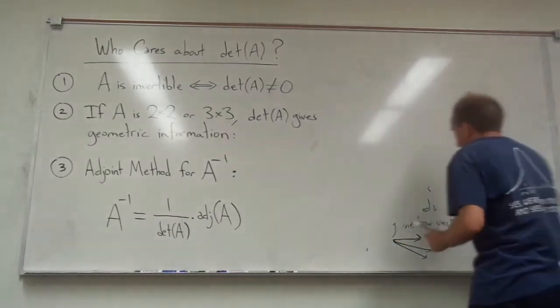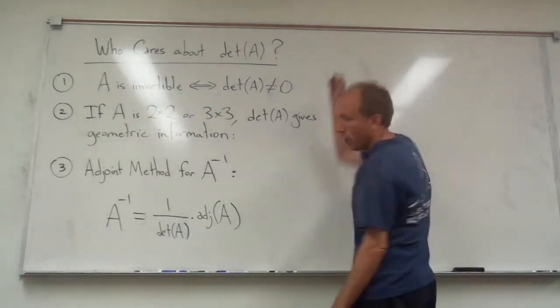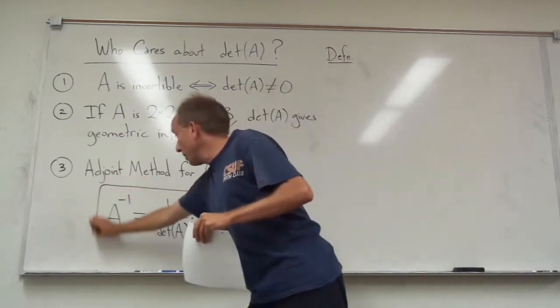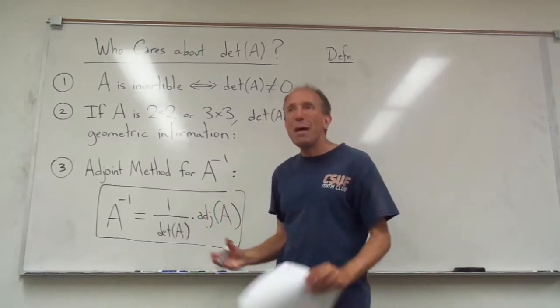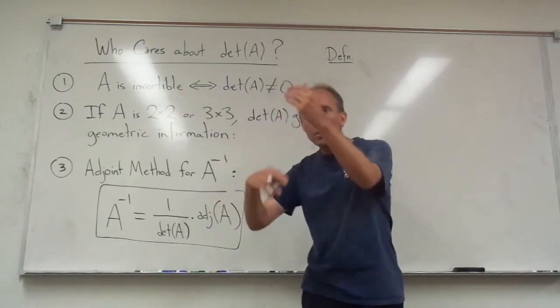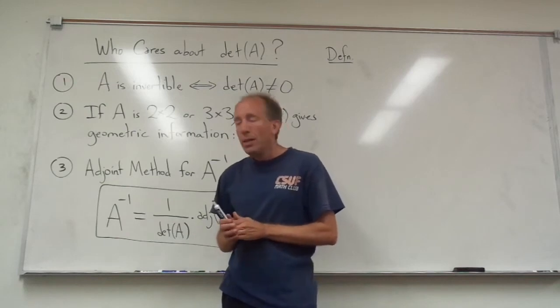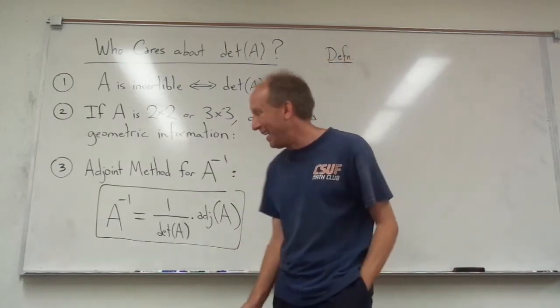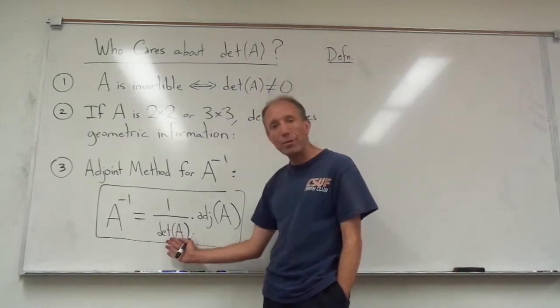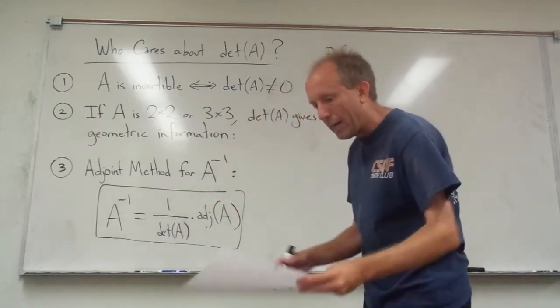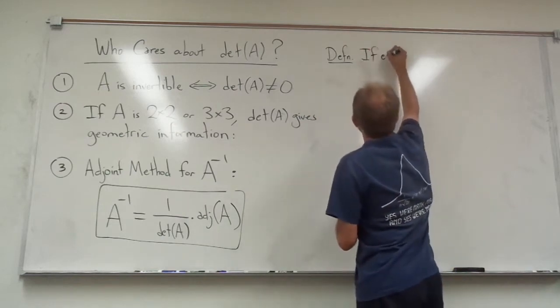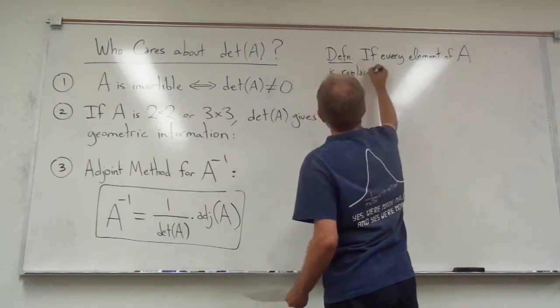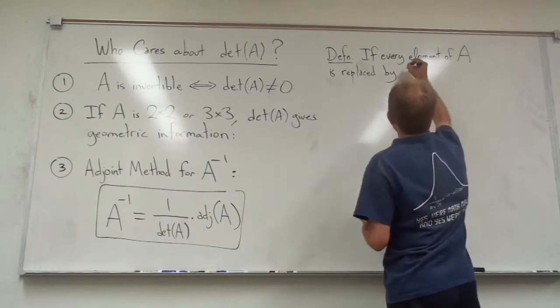To get the inverse of the matrix, I'm going to multiply this scalar by a matrix. And the matrix is written ADJ of A, and that's called the adjoint of A. Let me explain what the adjoint of a matrix is and how you find it. It turns out it's a pretty simple thing. What you do is the following. Let me just explain it this way. I'm going to make a couple of quick definitions here to tell you how you apply this formula. If every element of capital A is replaced by its corresponding cofactor, we get what's called the matrix of cofactors.